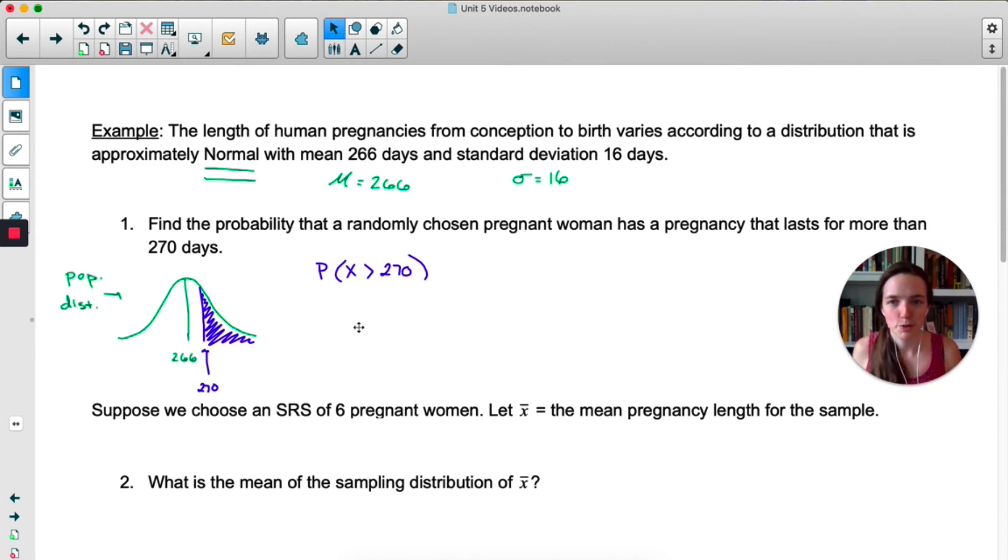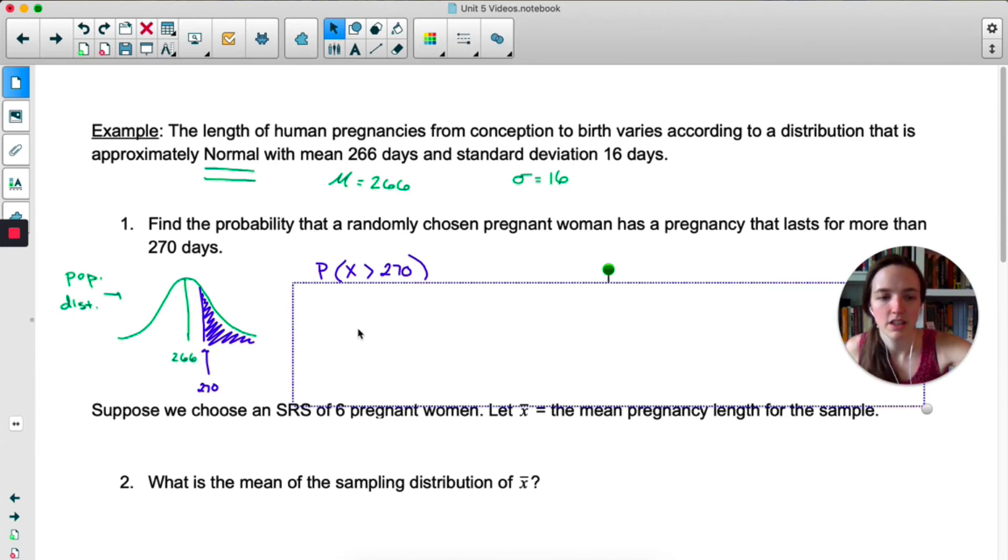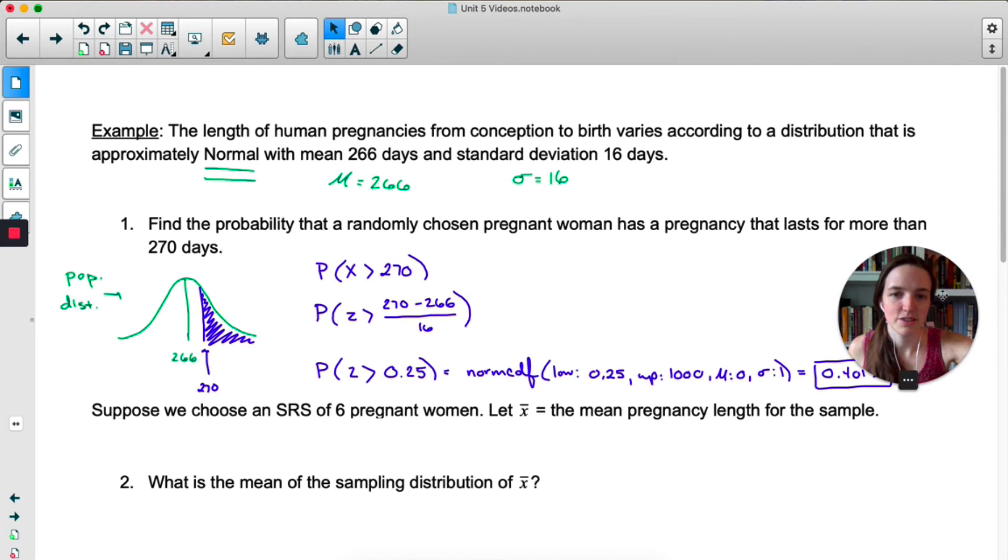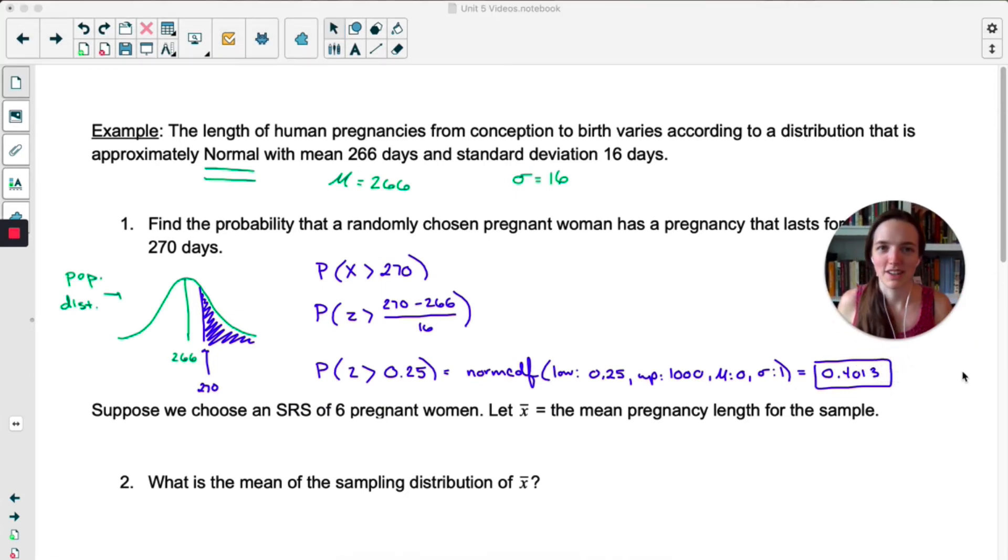So we can use our z-scores and our norm CDFs and all those tools we learned back in unit one. Okay, so we calculate a z-score. We plug it into norm CDF. I'm not going to get into detail there because we've done that so much. If that's confusing, go back to unit one, rewatch the z-score norm CDF videos.